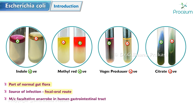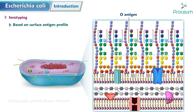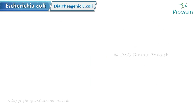E. coli is the most common facultative anaerobe present in the human gastrointestinal tract. Serotyping in E. coli is done based on surface antigen profile: O (somatic) antigen has more than 170 O serotypes, K (capsular) antigen has more than 100 K serotypes, and H (flagellar) antigen has more than 75 H serotypes.